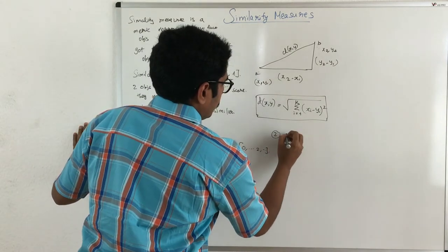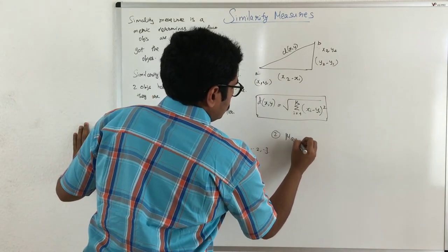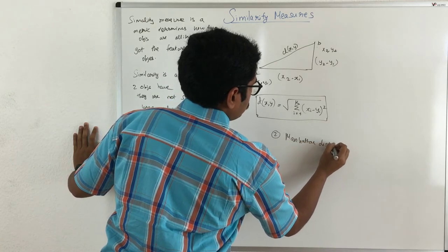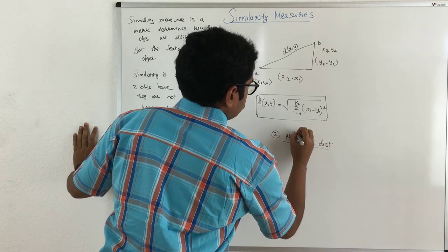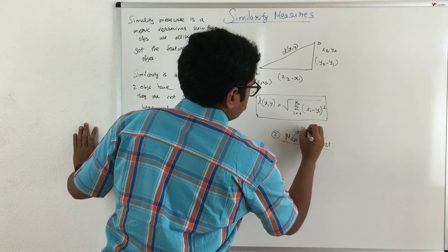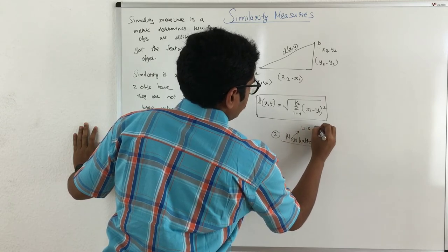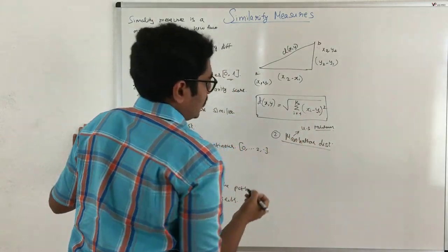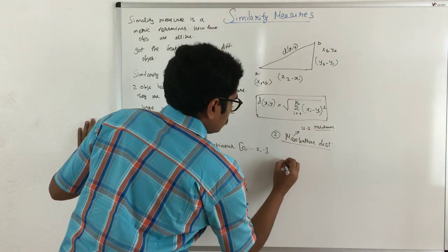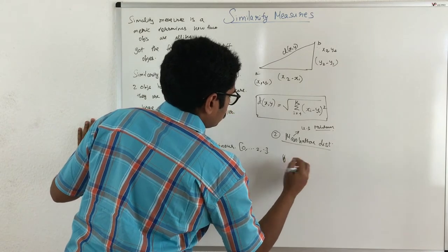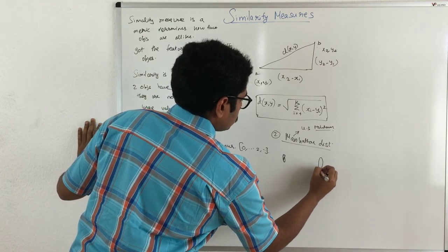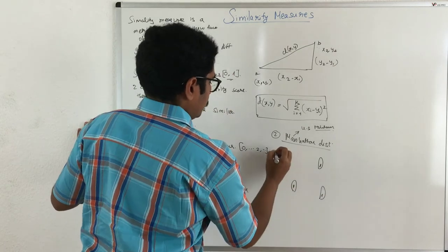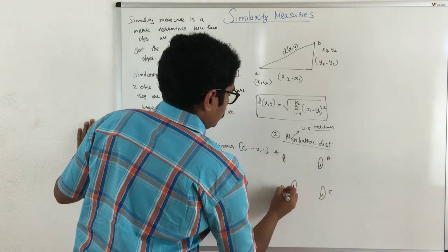Now secondly, we have distance called as Manhattan distance. So this name is a place or a city in US called as Manhattan. So from there we got actually this name Manhattan distance. So say for example, we have two locations, say two points. These are four different locations say A, B, C, D.